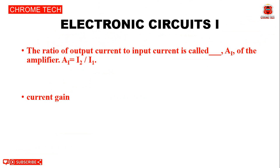Next question: The ratio of output current to input current is called dash Ai of an amplifier, where Ai = I2/I1. The answer is current amplifier (Ai).